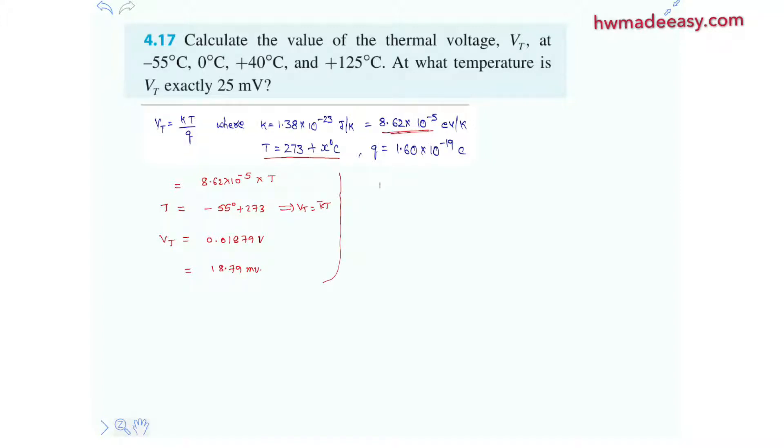Now let's solve T equals to 0 degrees Celsius. Here it is Vt is nothing but 8.62 multiplied with 10 power minus 5 multiplied with 273 Kelvin, which is nothing but 0.02353 volts, which is equal to 23.53 millivolts.